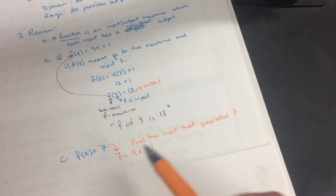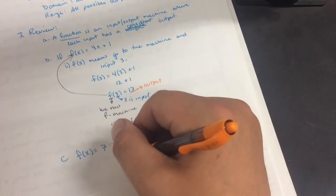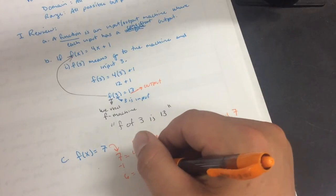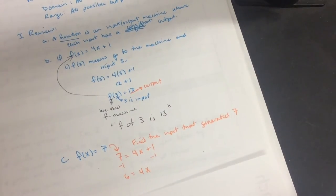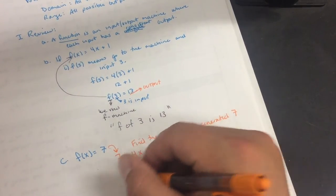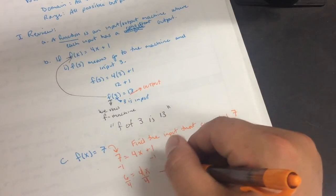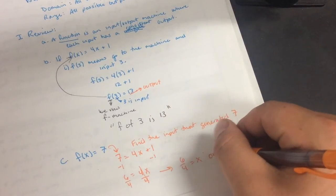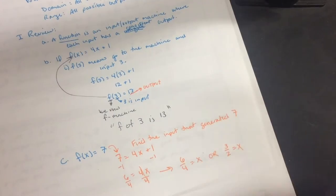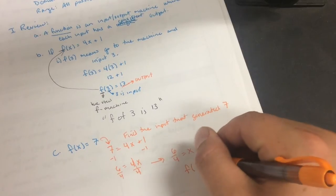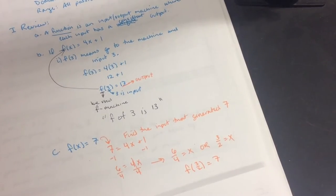And so we want to find the input that generated 7. Once we've set up the equation, all we have to do is solve for x. So I'm going to subtract 1 on each side. This gives me 6 equals 4x. Let's see. I'll divide by 4. Divide by 4 on both sides. This gives me 6 fourths equals x. Or I can simplify that to be 3 halves equals x. So what that means is that f of 3 halves equals 7.